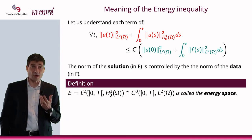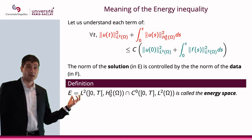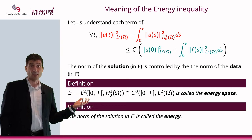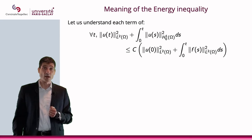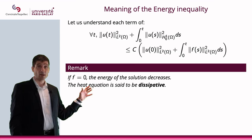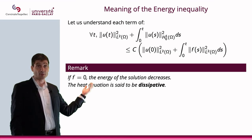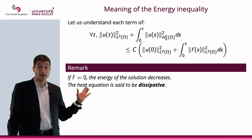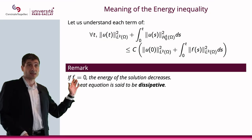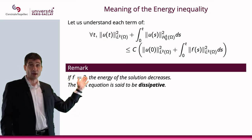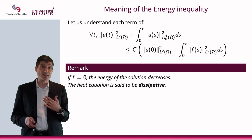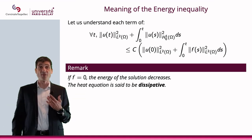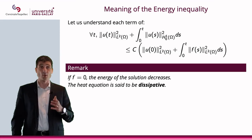I can give a name to this space E: it will be called the energy space. And the norm of the solution in E will be called the energy. So, if F is equal to 0, the integral between 0 and T of ‖F(s)‖²_{L²(ω)} will be 0. The right-hand side will be a constant, whereas the integral between 0 and T of ‖F(s)‖² will keep going up. So the energy of the solution has no other choice but to decrease — and when that happens, we say that we have a dissipative equation. So the heat equation is dissipative.